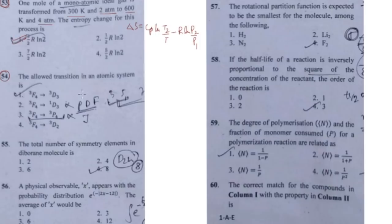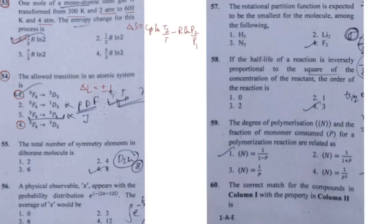Question 54 asks about allowed atomic transitions. For an allowed transition, ΔL = ±1 and there should be no change in spin multiplicity. Two options satisfy these conditions — option one and option four — both follow ΔL = ±1 with unchanged spin multiplicity. Applying the additional selection rule ΔJ = ±1, option number one should be the correct answer.